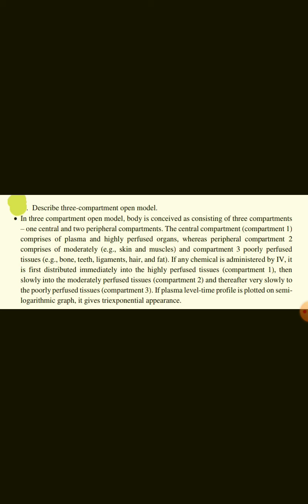Define three-compartment open model. In the three-compartment open model, the body is conceived as consisting of three compartments: one central and two peripheral compartments. The central compartment comprises plasma and highly perfused organs, whereas peripheral compartment two comprises moderately perfused tissues and compartment three comprises poorly perfused tissues. If a chemical is administered IV, it first distributes into highly perfused tissues, then slowly into moderately perfused tissues, and thereafter very slowly into poorly perfused tissues. A plasma-level time profile plotted on a semi-logarithmic graph gives a tri-exponential appearance.